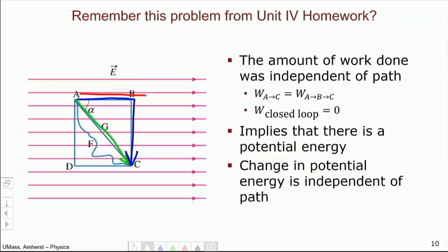Didn't matter. Furthermore, you actually calculated that the work done going all the way around is going to be zero. And we use this to justify that there is a potential energy. And we use this to justify that the change in potential is independent of how I go there. Potential around a closed loop is going to be zero.